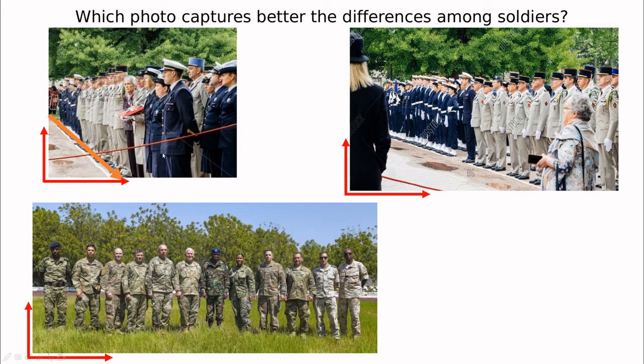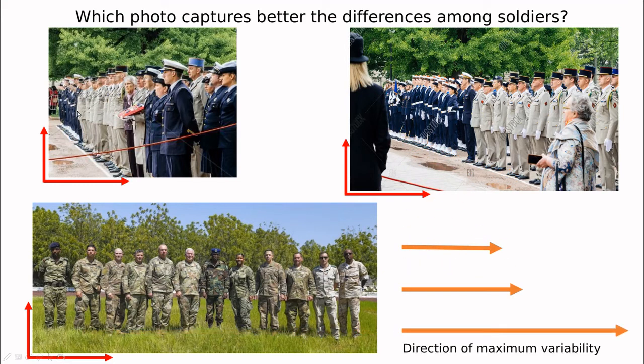Imagine we have two variables x1 and x2. You can see that the differences between different soldiers are collected in this direction. If you compare the length of the range of variability of these three photographs, the last one has the direction of maximum variability, so we can distinguish better the soldiers if we move in this direction.